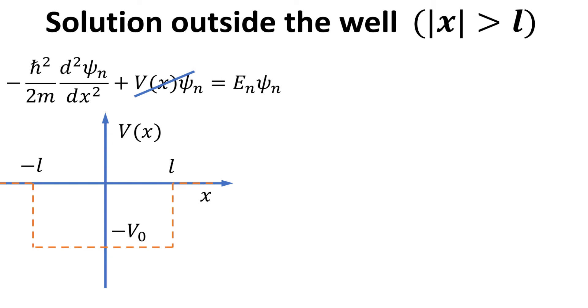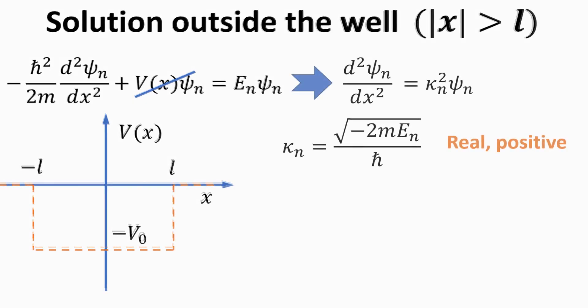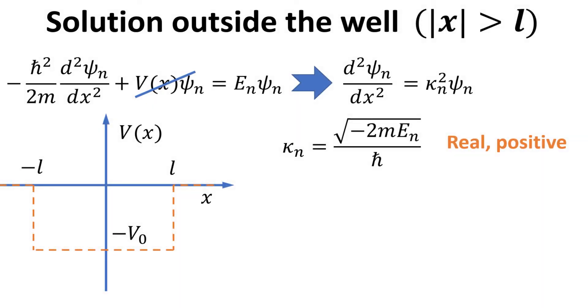Let's begin by first seeking the solutions outside the well. Outside the well, V(x) is just zero. The time-independent Schrödinger equation can be written in a slightly cleaner form, where we have defined κn to be square root of minus 2m En divided by ℏ. Since En is a negative real number, κn, as defined, is a real positive number.